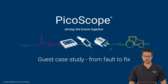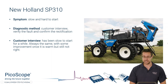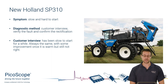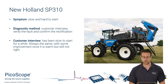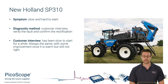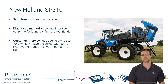This particular machine was a self-propelled crop sprayer. The symptoms were a very slow and hard start — when you came to crank it, it would take a while, be slow and sluggish, and then eventually it would start. This had been progressively getting worse. As we always say, the customer has the answers even if they don't. Your diagnostic method: stick with your process — customer interview, verify the fault, then confirm the rectification afterwards. Those two key points are often overlooked; having before and after evidence proves what you've done.